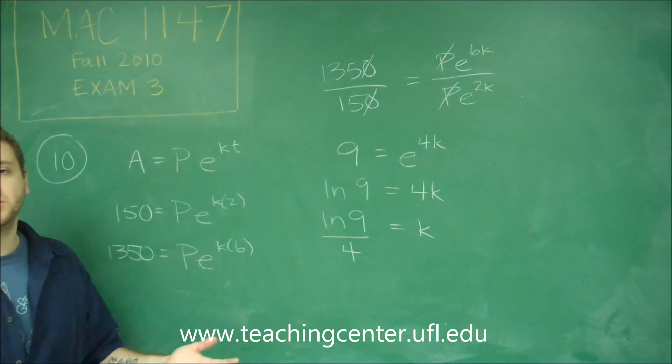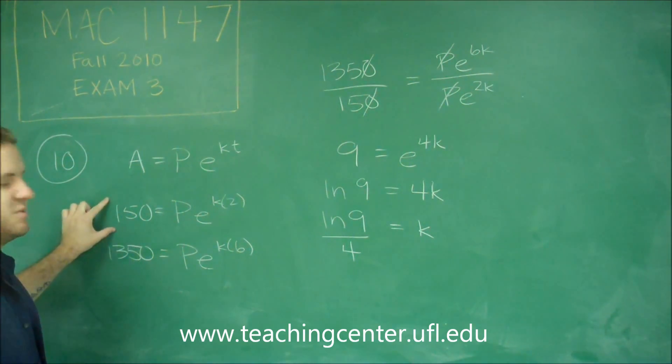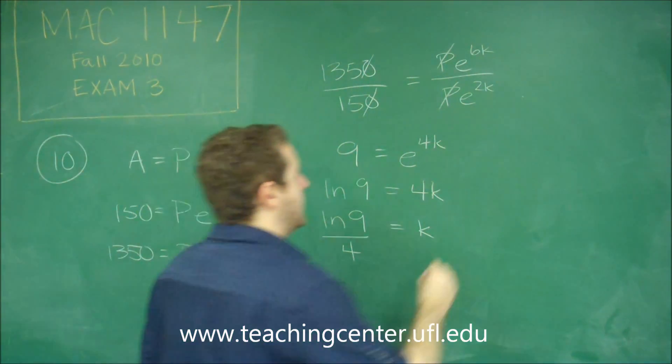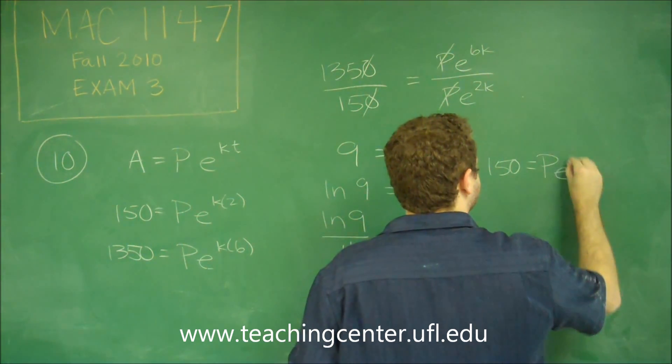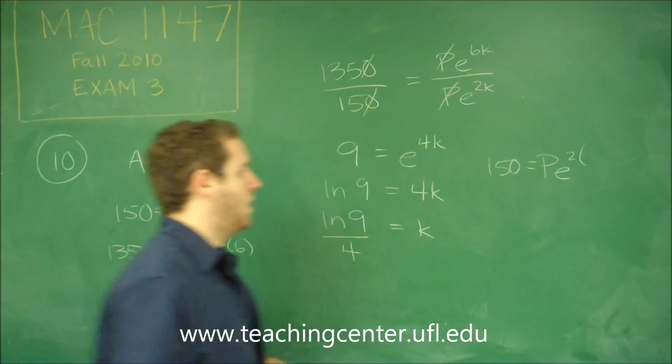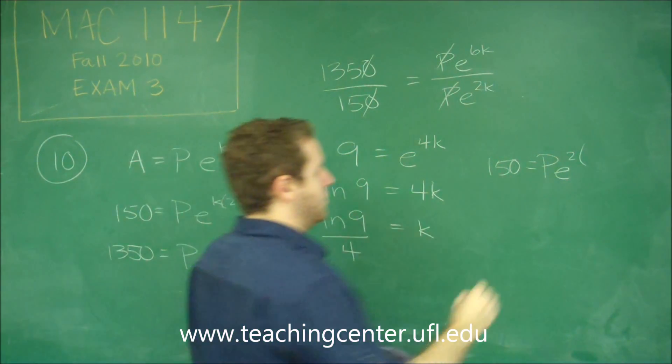You can plug it into either equation, but let's just do the one that has the smaller numbers. It will usually be easier. So we just plug in K there. So we get 150 equals PE to the 2 times our K, which is ln 9 over 4.